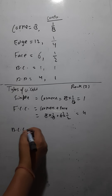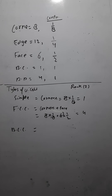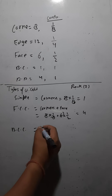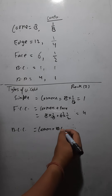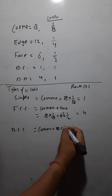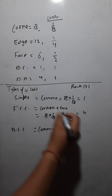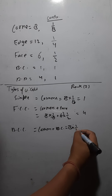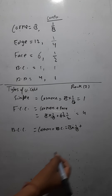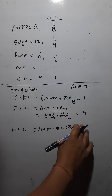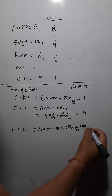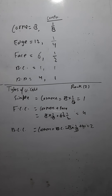For a body-centered cubic (BCC) unit cell, particles are at corners plus the body center. 8 corners × (1/8) = 1, and 1 body center × 1 = 1. So 1 + 1 = 2. The rank of the BCC unit cell is 2.